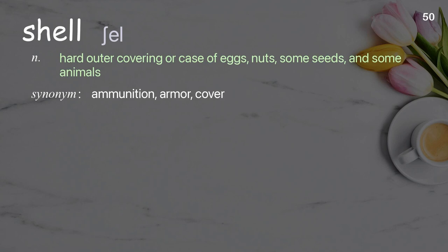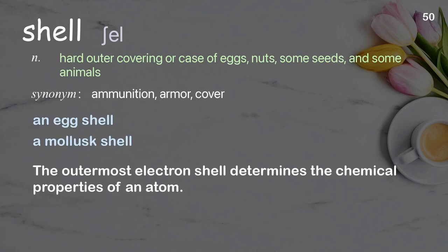Shell. The outer covering or case of eggs, nuts, some seeds, and some animals. Examples: an egg shell, a mollusk shell. The outermost electron shell determines the chemical properties of an atom.